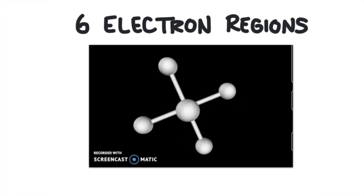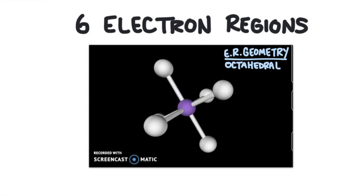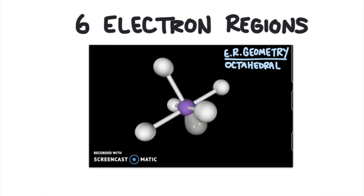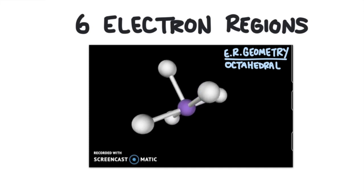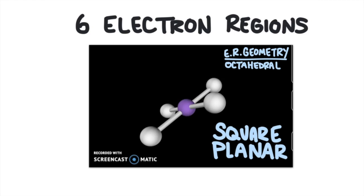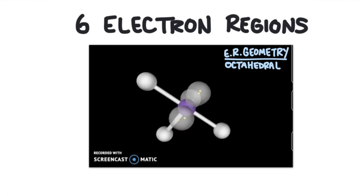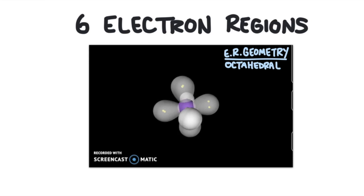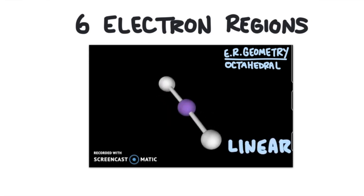Each molecule will have the same electron geometry — it'll always be octahedral because the electron regions will space themselves out the same whether they're bonds or lone pairs. Five bonds and one lone pair will look like this; it's called square pyramidal. With four bonds and two lone pairs, it's going to look like this — this is called square planar. With three bonds and three lone pairs, it's called t-shaped. With two bonds and four lone pairs, it's called linear. All of these molecular geometries have the same electron geometry of octahedral, but since we can't see the lone pairs, each one has its own unique molecular geometry.